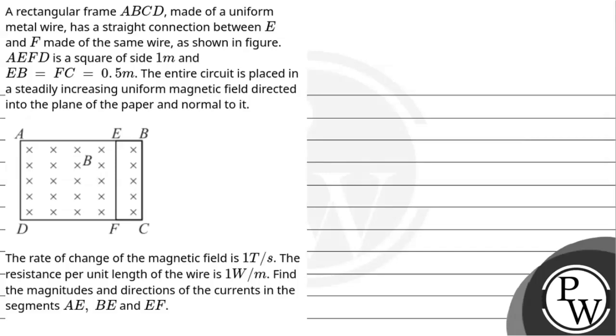Hello, let's hear out the question. A rectangular frame ABCD made of uniform metal wire has a straight connection between E and F made of the same wire. AEFD is a square of side 1 meter and EB = FC = 0.5 meter. The entire circuit is placed in a steadily increasing uniform magnetic field directed into the plane.